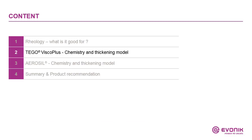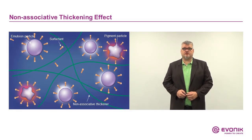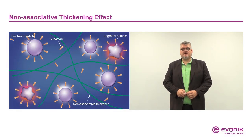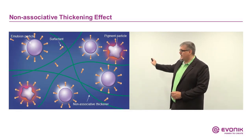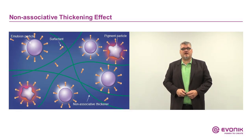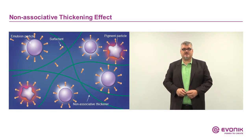Let's come to one of our product groups, the Tego VSCO Plus. Talking about thickening effects, we have to consider that there are different chemistries to do so. Here we have the non-associative thickening effect. The non-associative thickener is described by screen-like chains that float between the other particles of the coating matrix — the pigments and fillers in the binder matrix — and hinder the free flow of these particles, giving increased viscosity.